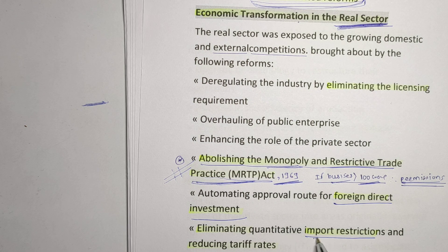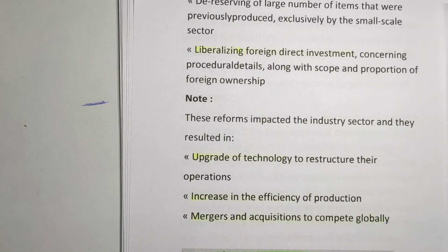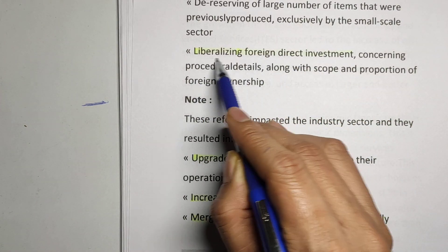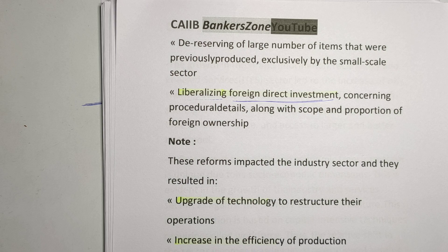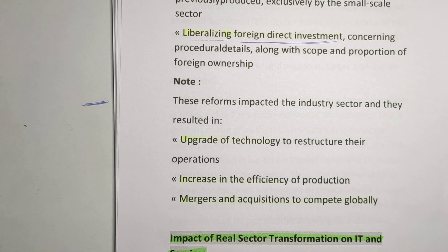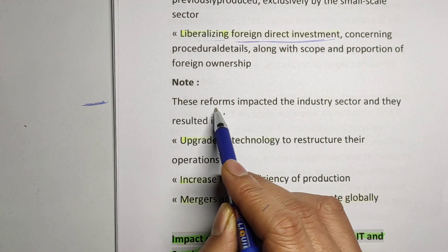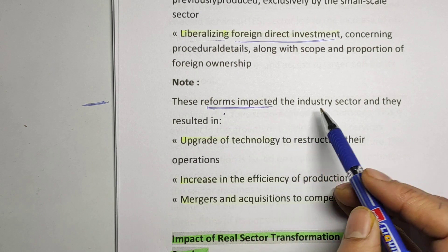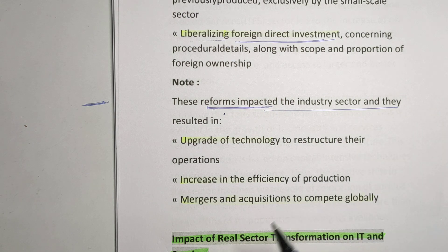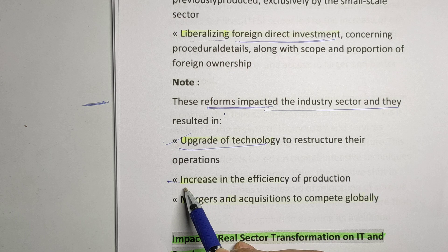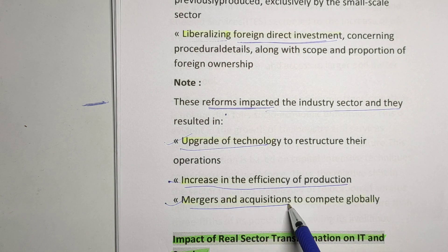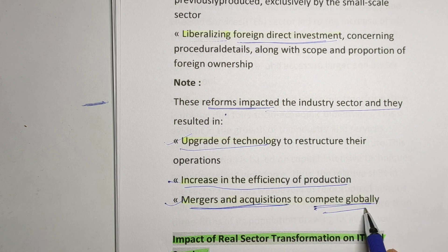Second, foreign direct investment was allowed, as well as some import restrictions relaxed and tax relief given. Liberalization in FDI means foreign direct investment is also allowed. The reforms impacted the industry sector and resulted mainly in the upgradation of technology, increasing efficiency, and mergers and acquisitions that lead to competing globally.